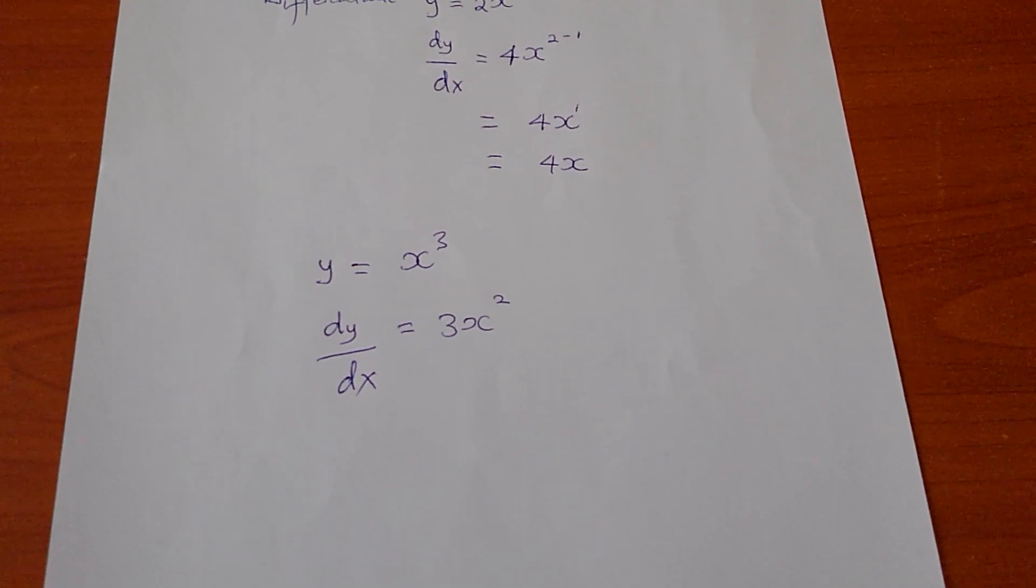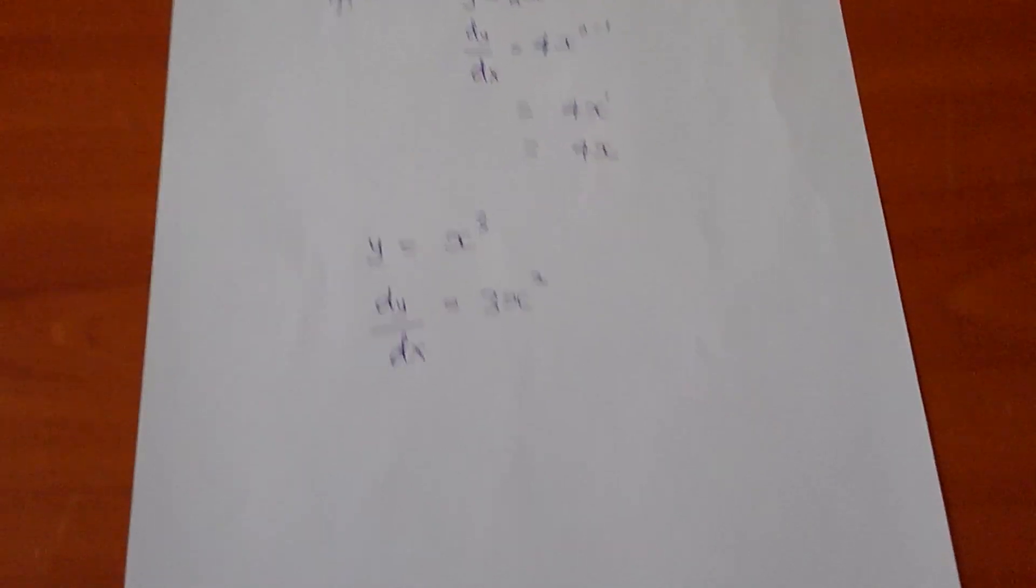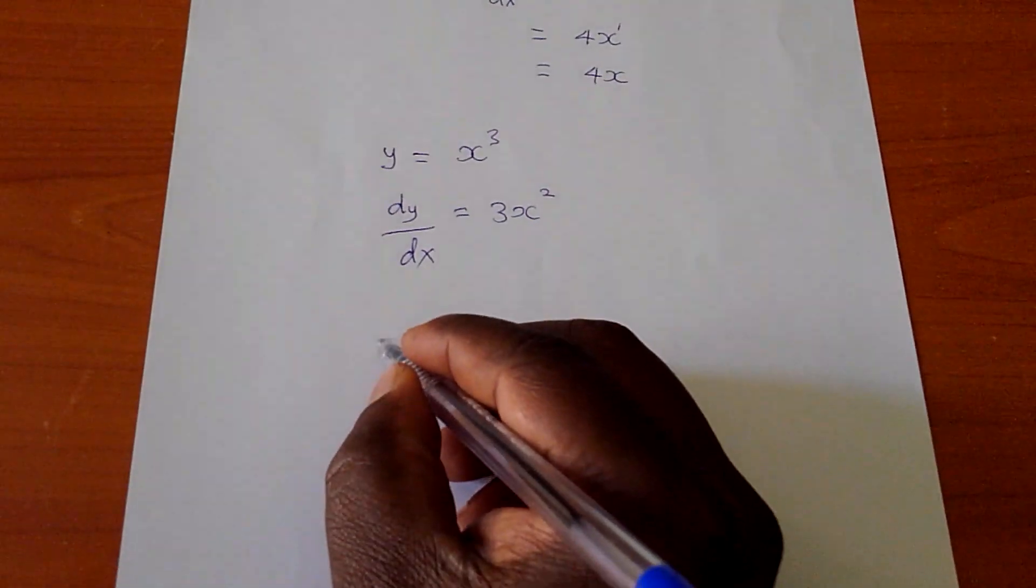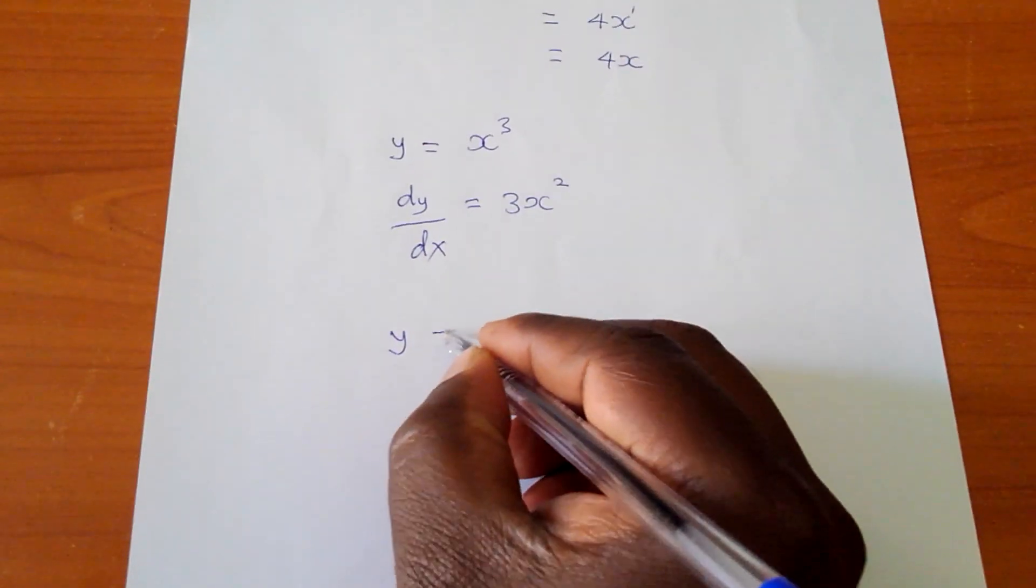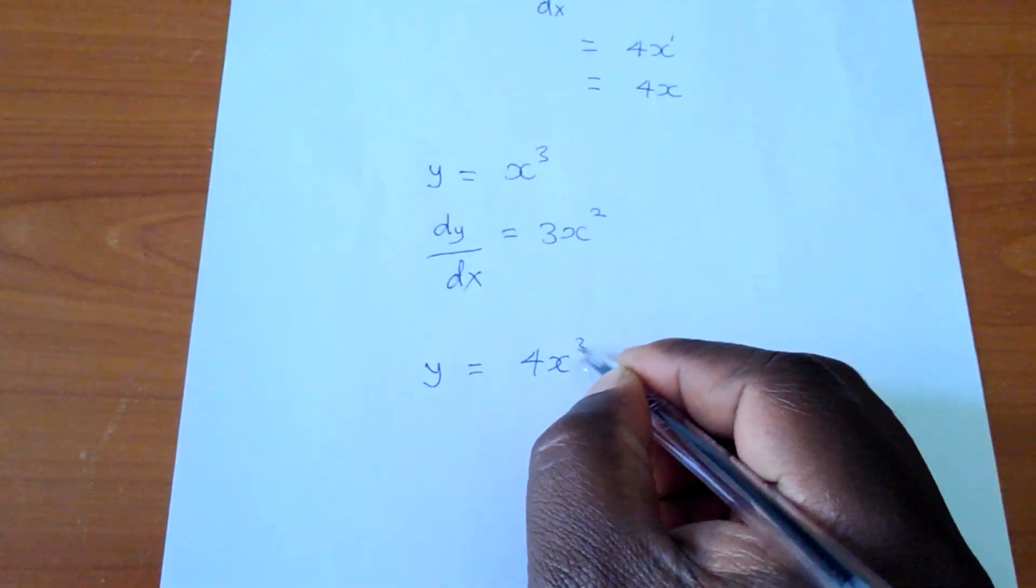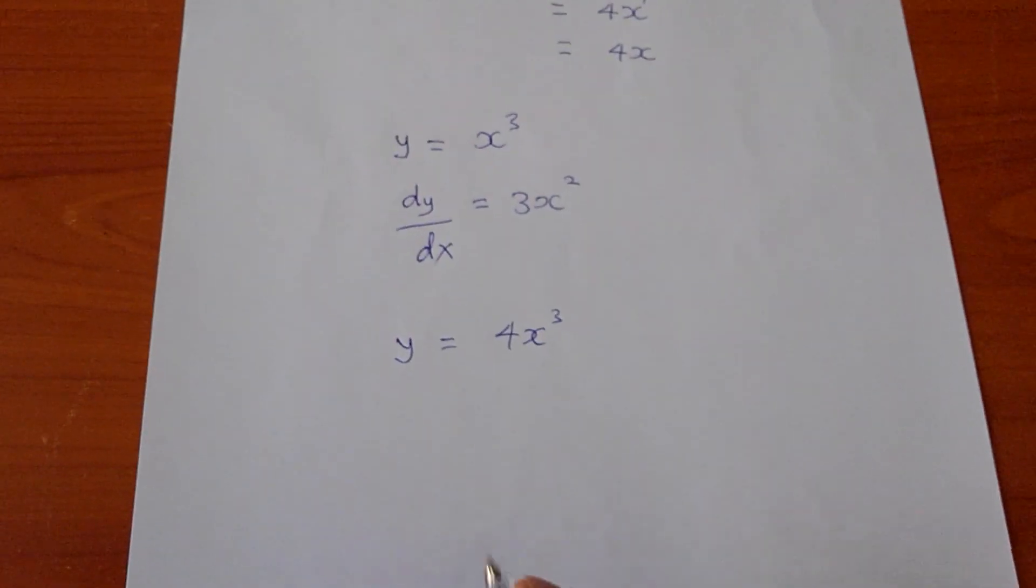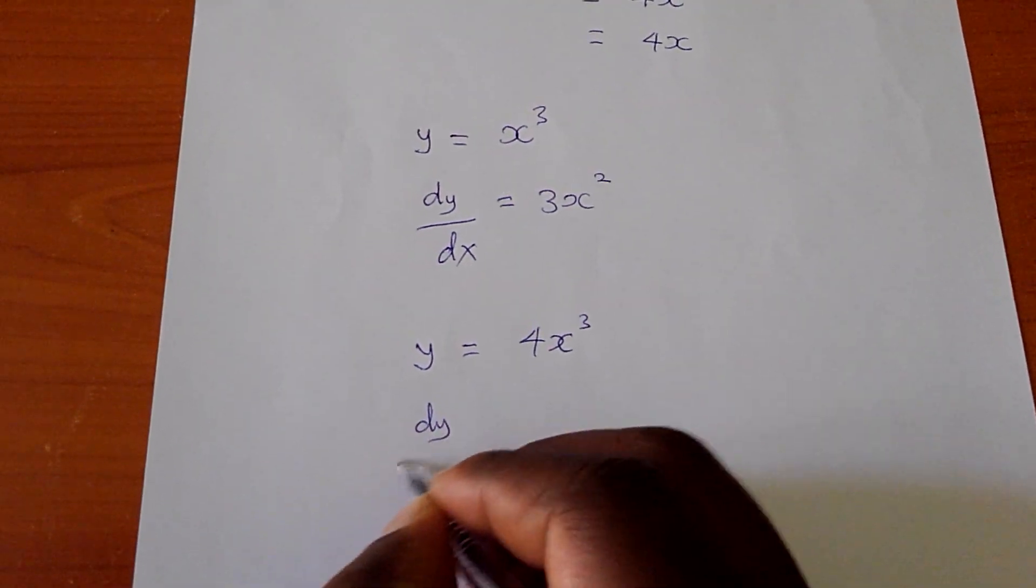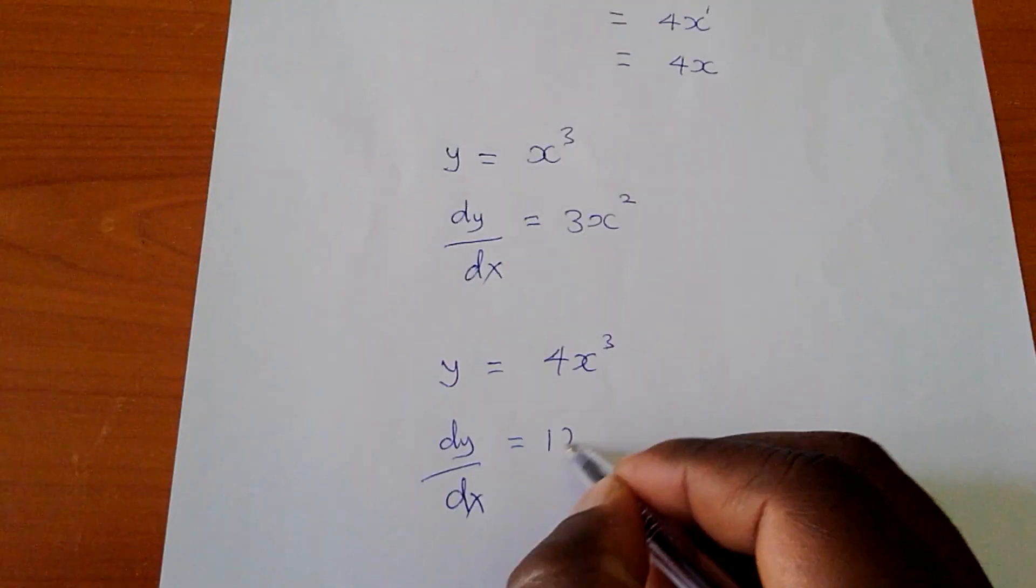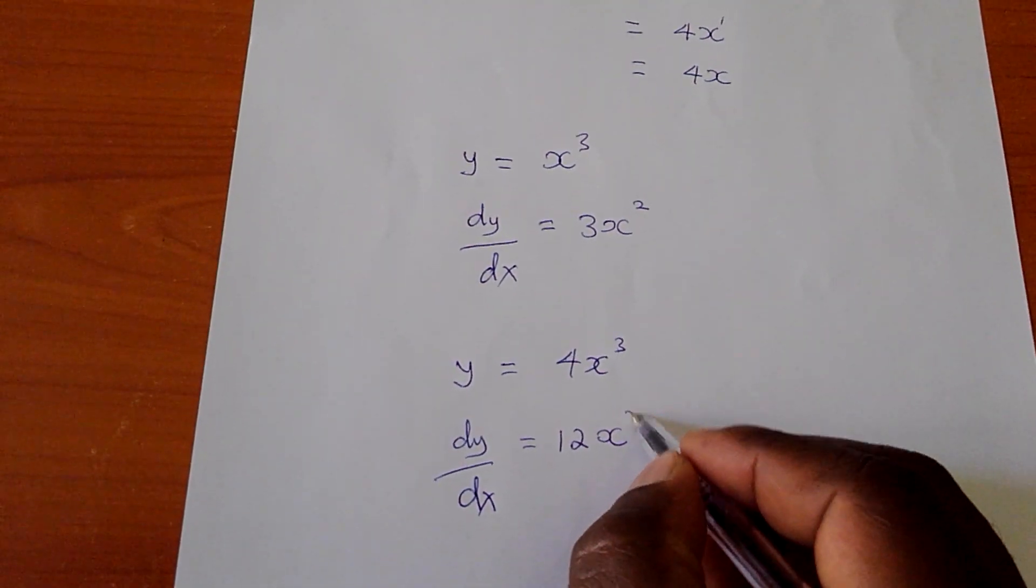Let me give you the last one. I think also this one will be useful. If I say y equals 4x cubed, and they say find dy/dx, this will be dy/dx, which is the gradient, equals to 12x to power 2.